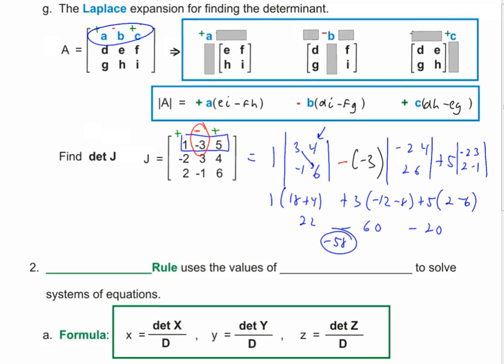If I wanted to, I could expand off the first column. When dealing with the sign factors for a column, you still start at the top left as plus and alternate. So top left is plus, the next entry down is minus, and the one below that is plus for the column you're dealing with. The procedure from there on out is the same.